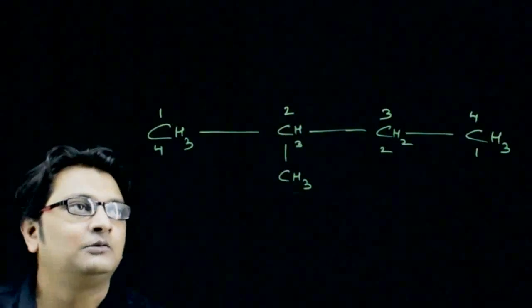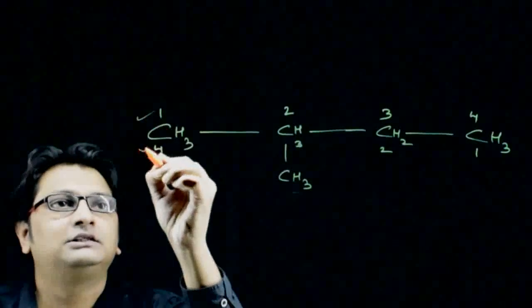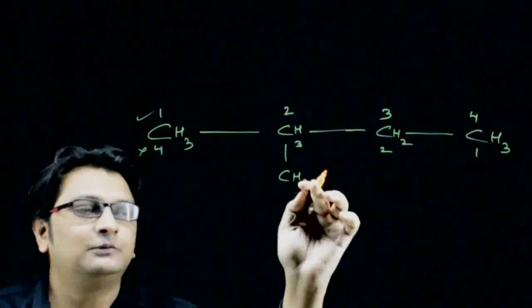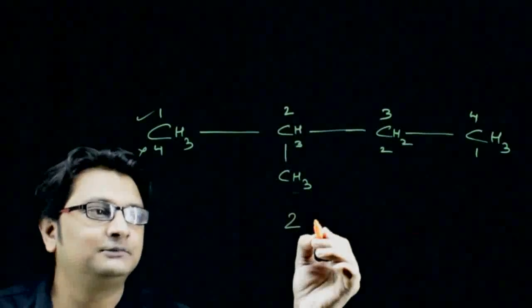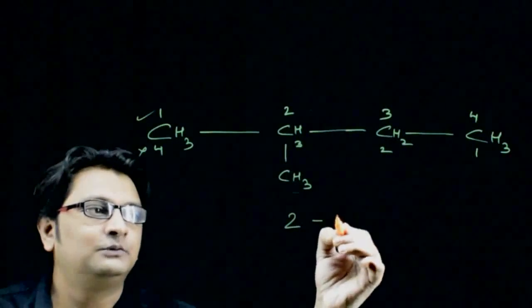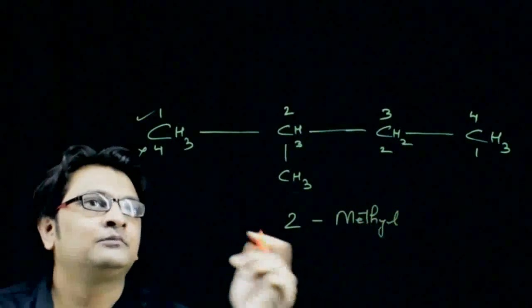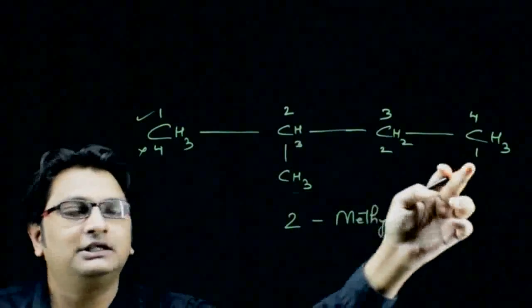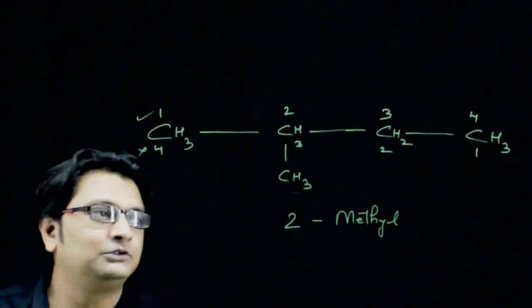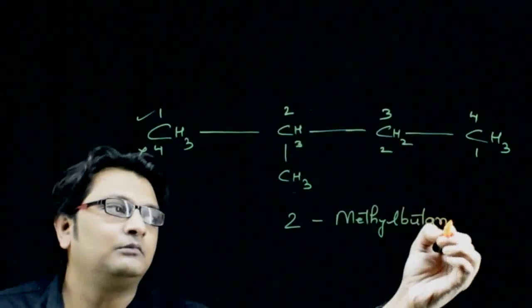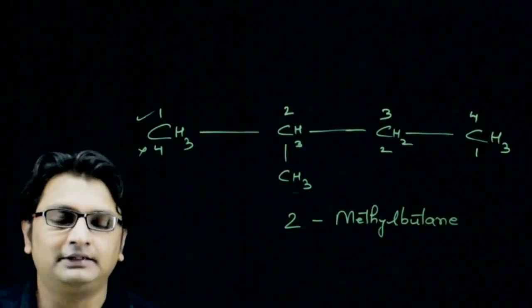Now for naming, this is correct, this is not correct. So at two, methyl is there. Two-methyl, and in the main carbon chain there are four carbon atoms, so we will write butane.